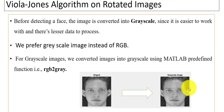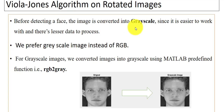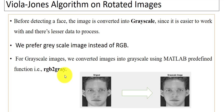To solve this problem, first we will convert the image into a grayscale image, as you can see here. Before detecting a face, the image is converted into grayscale as it is easy to work with and there is less data to process. So we will prefer grayscale images instead of RGB. In MATLAB, we have a predefined function called rgb2gray — using this function, we can easily convert an image into a grayscale image.